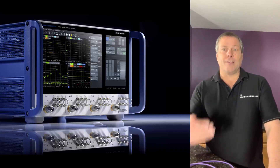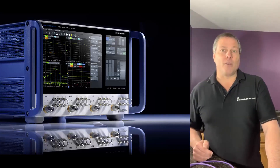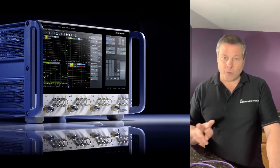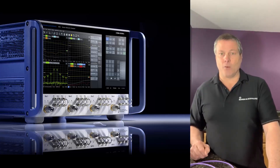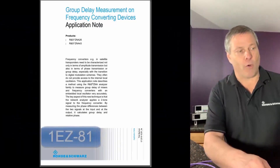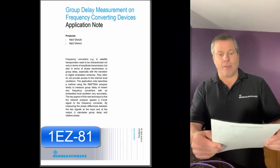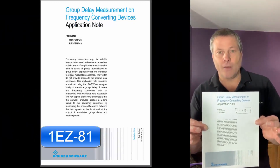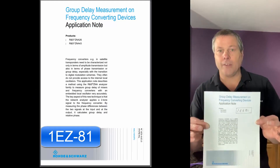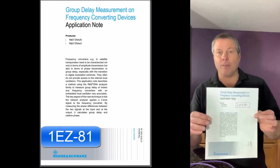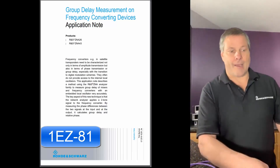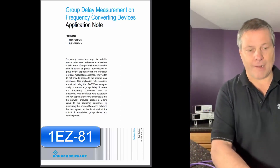In addition to that, I'm going to use Option K9, which is our two-tone technique for making the group delay measurement. You can read more about this option by looking at Application Note 1EZ81, which goes into all the detail of how this two-tone technique works for measuring group delay on devices with embedded LOs.